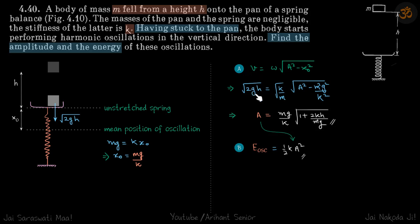So v at this point is root 2gh, omega is root k by m, a we need to find, and x0 is mg by k. Again, this x0 is not amplitude. Amplitude is what we need to find. This x0 is initial distance of the mass from its mean position of oscillation. We solve this and get the value of a.